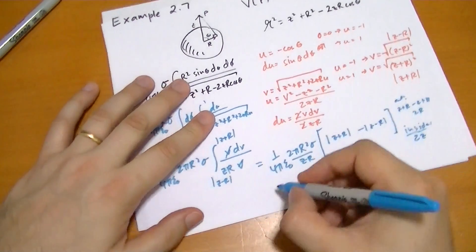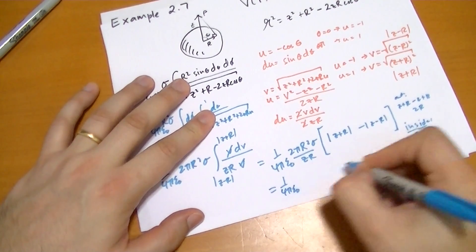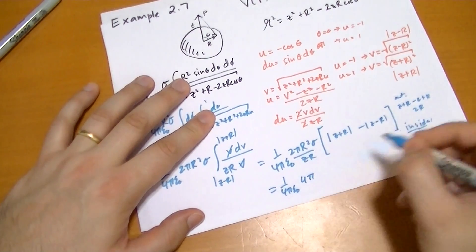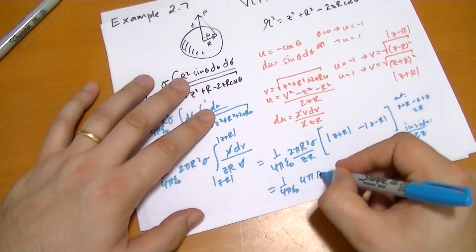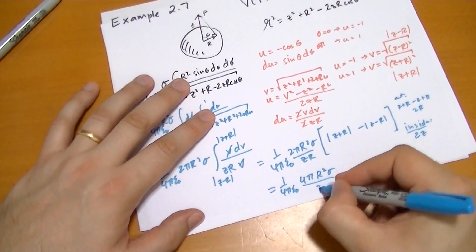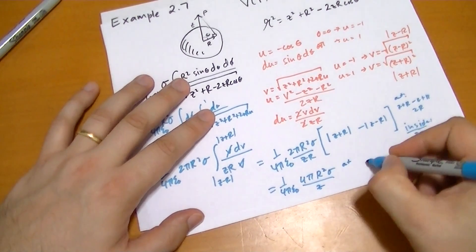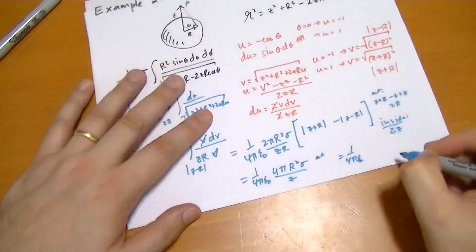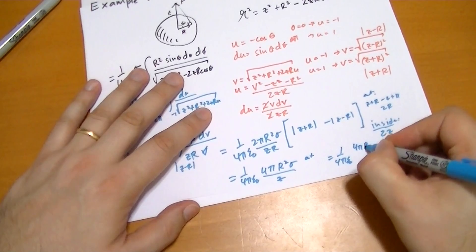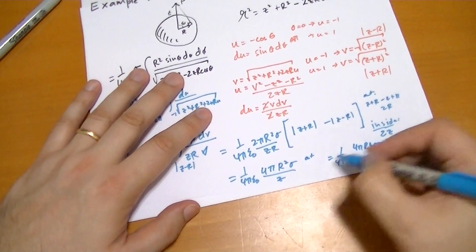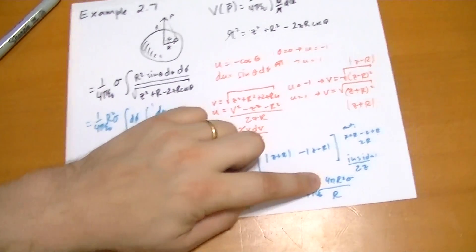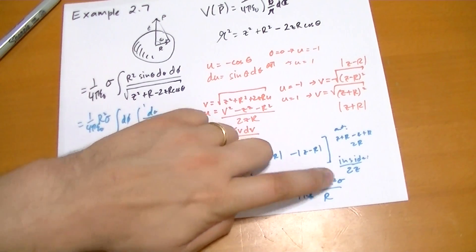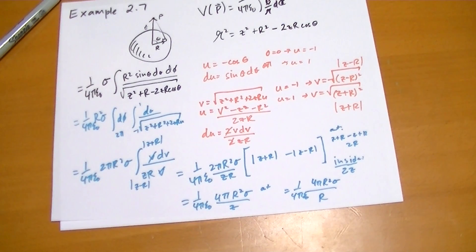1 over 4 pi epsilon naught. This factor of 2 is going to go over here to 4 pi. And then outside, it's going to be r squared sigma. And this r is going to cancel the r on the bottom, so you get z. Outside. And then inside, it's going to be 1 over 4 pi epsilon naught, 4 pi r squared sigma. And the z is going to cancel the z on the bottom, so you're going to get over r. And 4 pi r squared sigma is just the surface area times sigma. That's the total charge of the sphere. So we solved this using a rather simple integral.